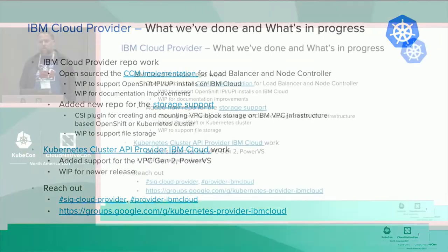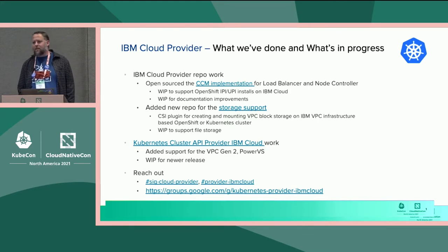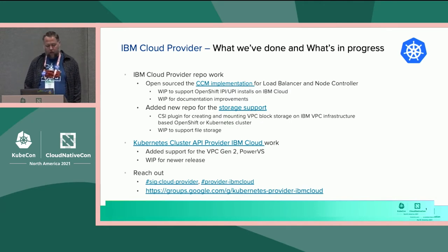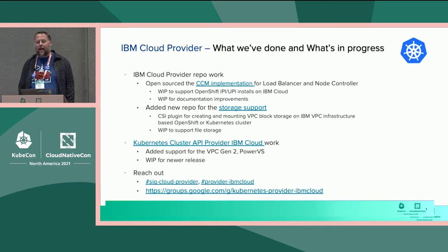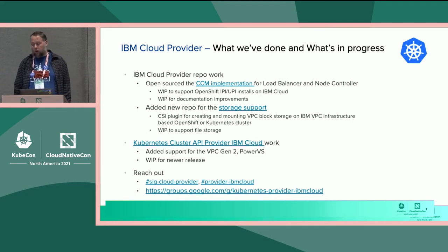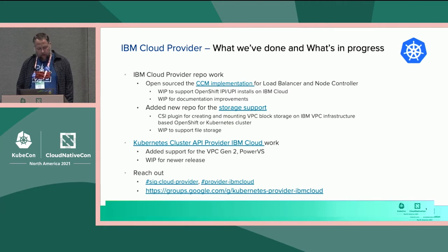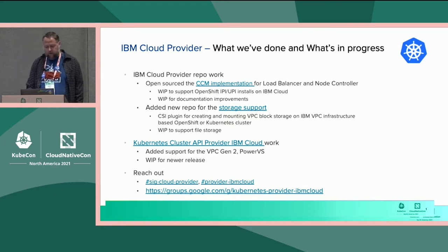We also had some folks from IBM give us a slide. Dev is actually at this conference but is at a different talk right now. IBM has also been doing a lot of work to get out of tree and get that whole system working. They have a CCM implementation, and interestingly their implementation has a couple of control loops from their managed offering that have since been open sourced, so anyone interested can see how IBM does their managed node control or load balancing. Their CSI stuff is also coming along quite well, and they've got some interesting things coming up with the API provider — if you're interested in that or in OpenShift, definitely take a look.